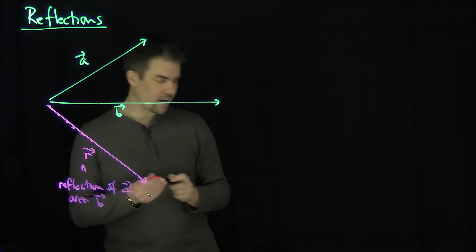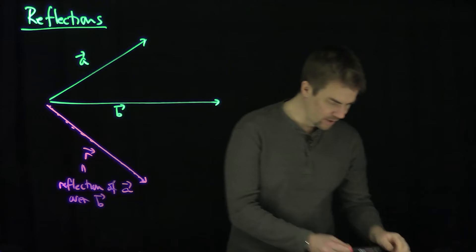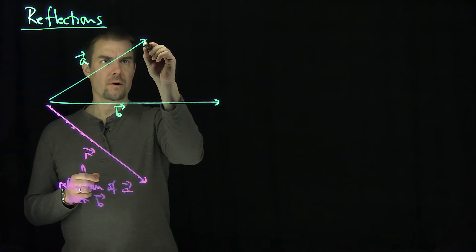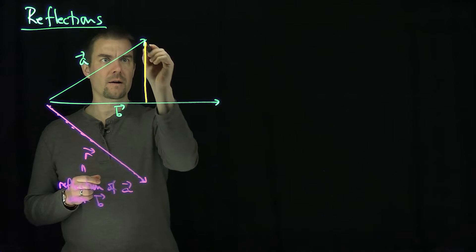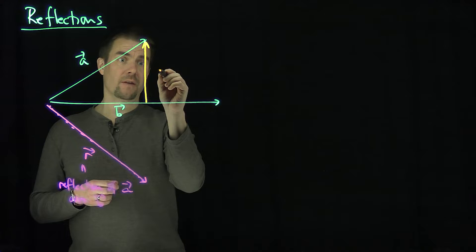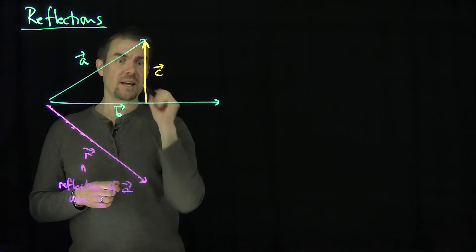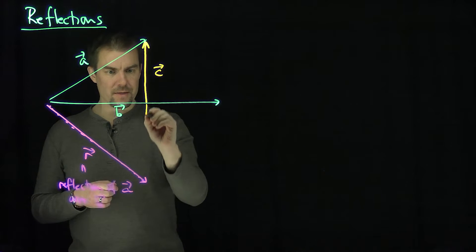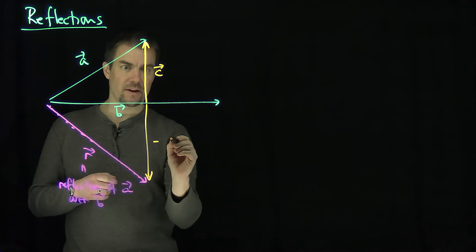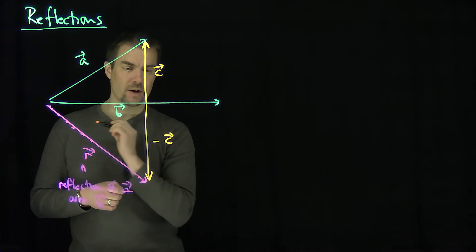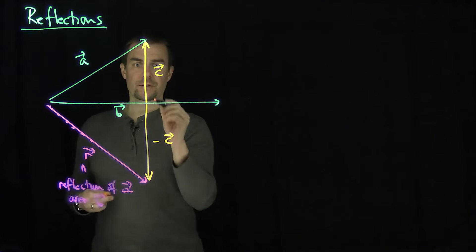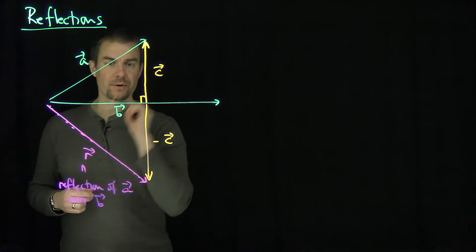So what's the key idea behind the reflection? The key idea is that if I draw this perpendicular right over here — let's call that vector c — then this vector over here has to be the vector negative c, pointing in the exact opposite direction. So I need to find a formula for this vector c where it makes a perpendicular.